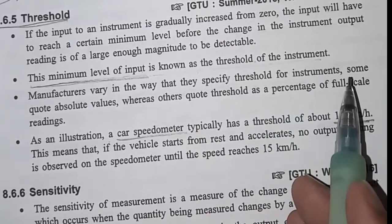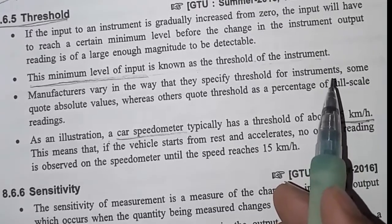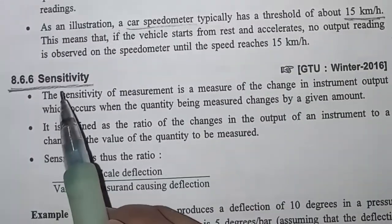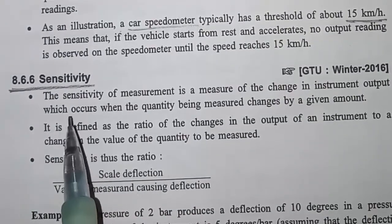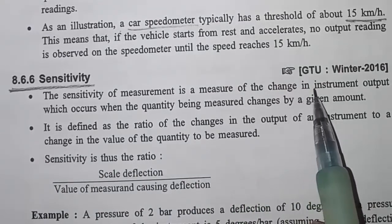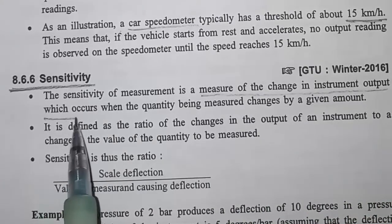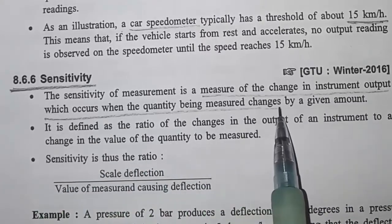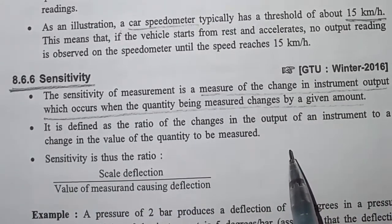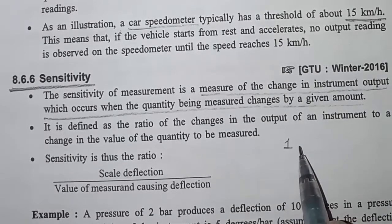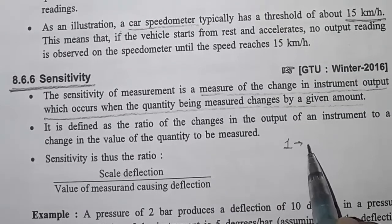Every instrument has this property. The minimum level of input required to produce a response is called the threshold. Next is sensitivity. So what is sensitivity? It is a measure of the change in the instrument output which occurs when the quantity being measured changes by a given amount. For example, in weight measurement, after 1 kg, if you add some amount of weight, what should be the next measurement?